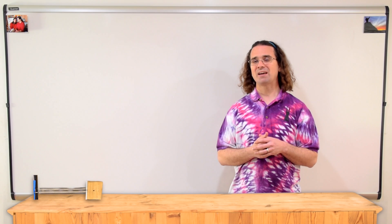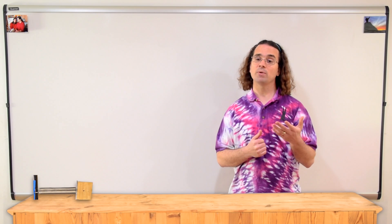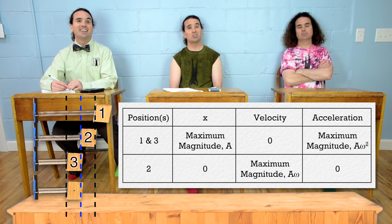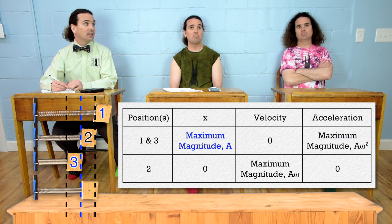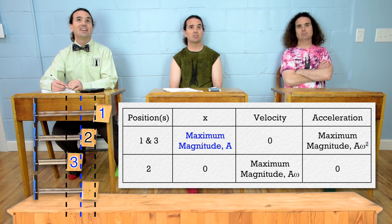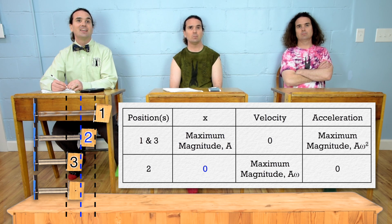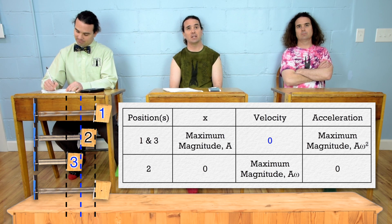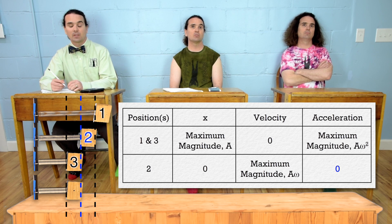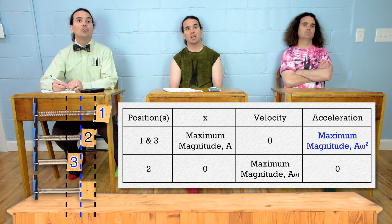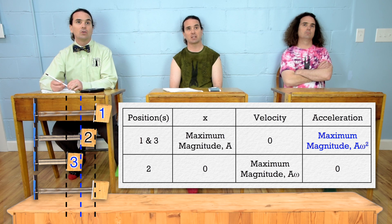Bobby, please remind me of the positions we have defined and what we know about those positions. Positions 1 and 3 are where the magnitude of the displacement of the mass equals amplitude, and position 2 is where the mass is at rest position. The velocity of the mass at positions 1 and 3 is zero and has a maximum magnitude at position 2. Its acceleration at position 2 is zero and at positions 1 and 3, the magnitude of the acceleration has a maximum value.